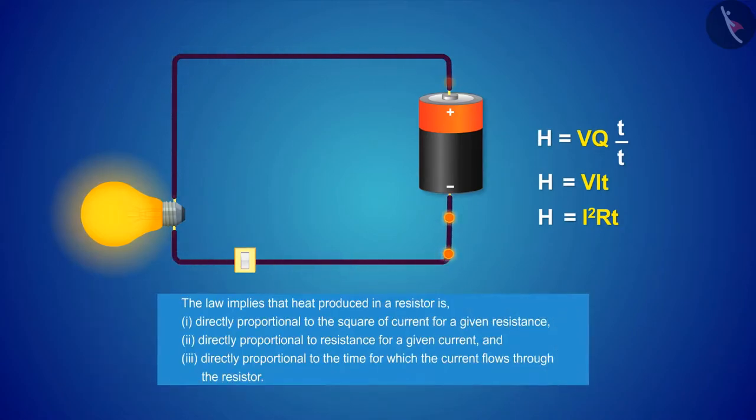The law implies that heat produced in a resistor is directly proportional to the square of current for a given resistance, directly proportional to resistance for a given current, and directly proportional to the time for which the current flows through the resistor.